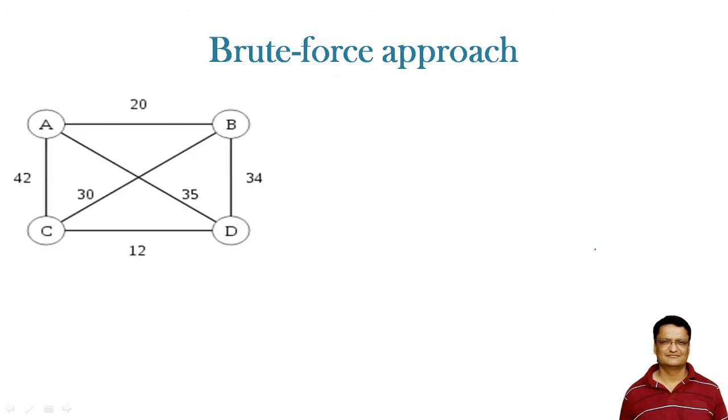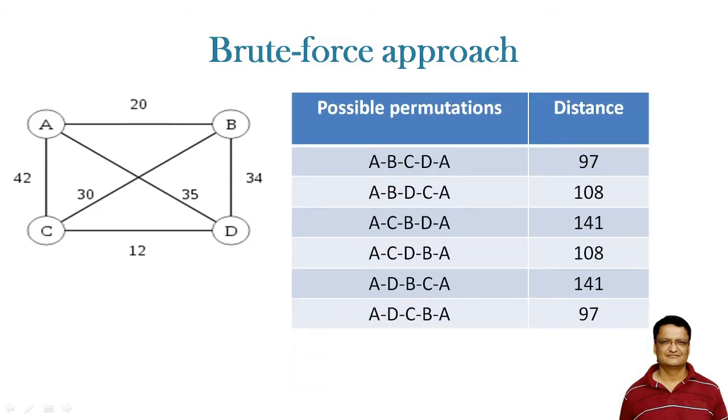Now let us calculate the distance for each of these options. If we calculate the distance for each option, we get these values. You can see that 97 is the minimum distance he needs to travel. If he selects A, B, C, D, A or A, D, C, B, A - both are one and the same - he will have to take the minimum distance.